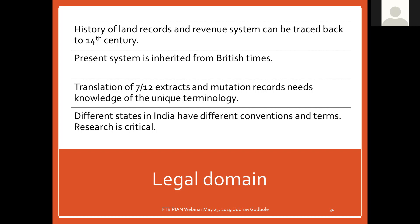Also, in different states of India there are different conventions and terms. For example, land measure in Maharashtra is in hectares, but in Bihar it may be 'bigha', and in some other places it will be acres. So you have to do research. If you get a document from Uttar Pradesh, there will be a term like 'uttar' which is actually the local term for a 7/12 extract. You need to do research before you start translating.